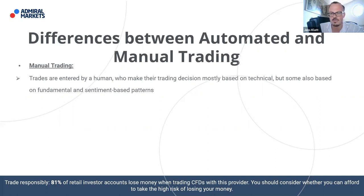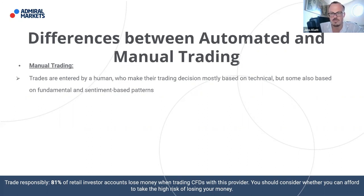Based on those parameters — mainly identified via technical analysis — you determine where to enter the trade, where to place your stop, and what your target is. You can see this is manual trading; it follows an algorithm to some extent. You go through a technical picture, fundamental picture, and sentiment picture, but you enter the trade manually by clicking your mouse and concluding that today is a good day to buy gold.